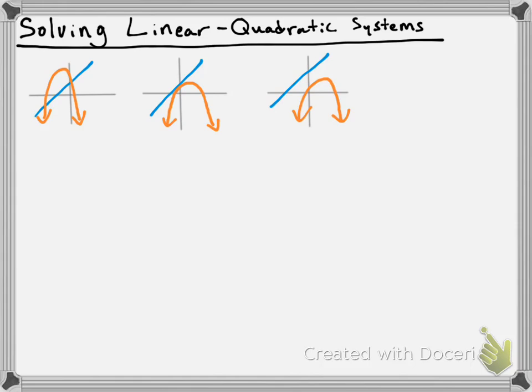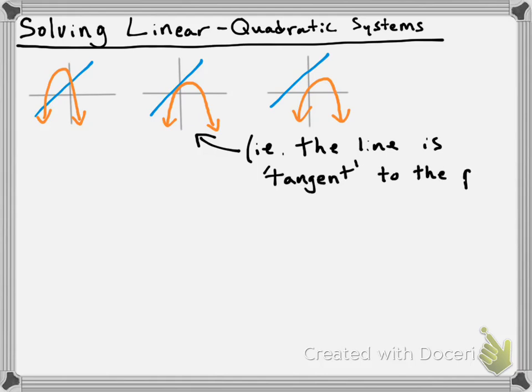Just quickly, I want to point to the case in the center because it has a name. When the parabola and line touch at one point like that, we say that the line is tangent to the parabola. You're going to need to know that for a couple of questions in the homework — just remember that they're tangent to one another.